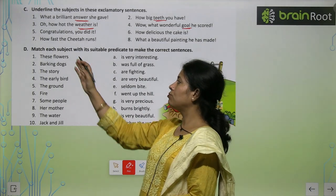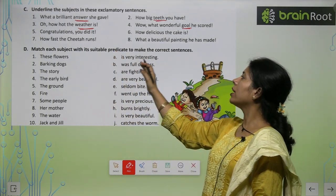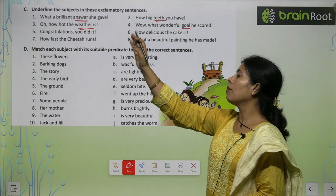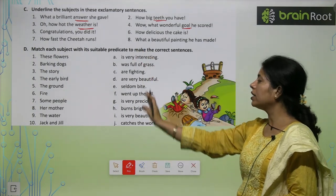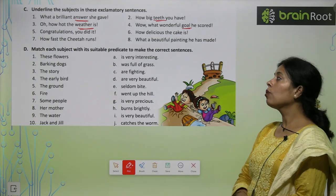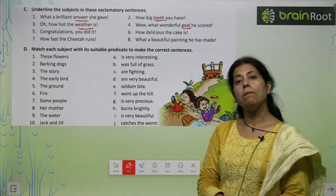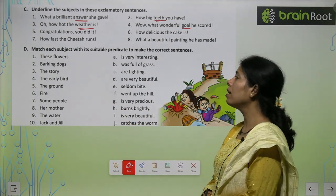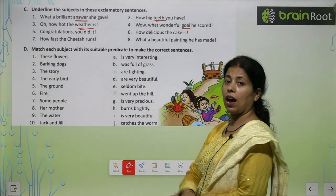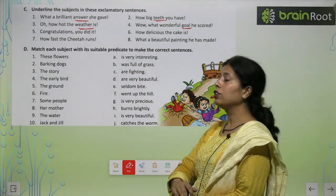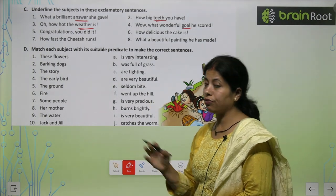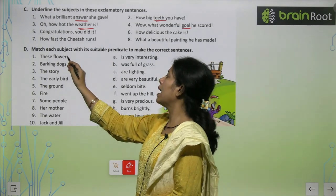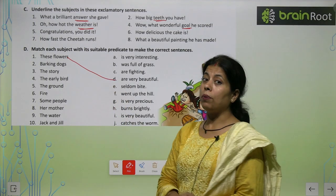Match each subject with its suitable predicate to make the correct sentences. Humko yahan pe subjects diye gaye hain aur yahan predicate part hai. Humko subject ko predicate se match karna hai. These flowers — kya hoti hai flowers? Are very beautiful. Yes! The flowers are very beautiful. So I will match this subject with this predicate.